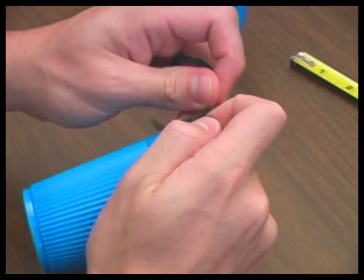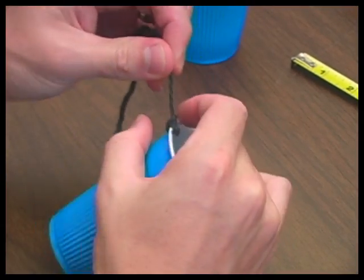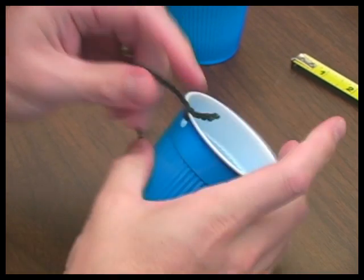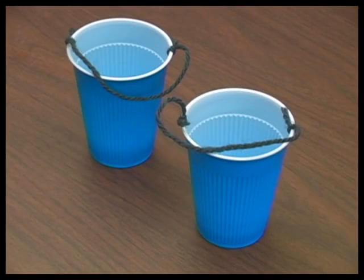Taking one plastic cup and one piece of string, thread one end of the string through one hole in the cup and tie a knot. Do the same for the second end of the string and second hole in the cup. You may wish to double knot the string so it does not separate from the cup during testing. Repeat this step for the second cup and second piece of string.